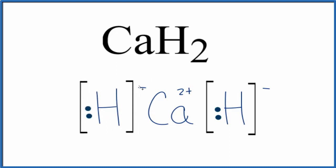Since the calcium is two plus, we'll need the two hydrogens to balance the charge out. So this is the Lewis structure for calcium hydride.